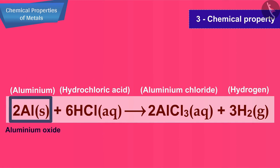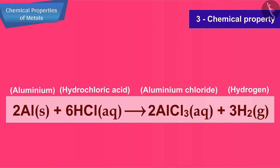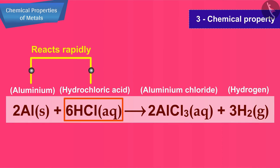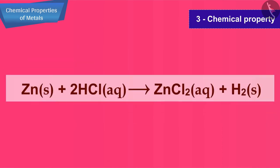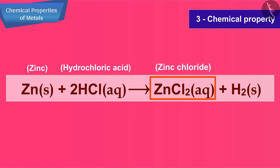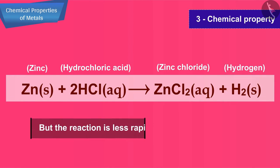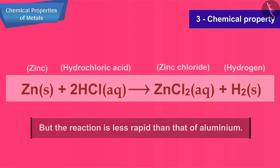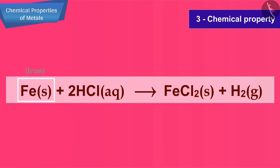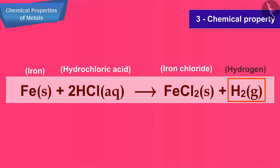Aluminium metal at first reacts slowly with dilute hydrochloric acid due to the presence of a tough protective layer of aluminium oxide on its surface. When this outer oxide layer gets dissolved in acid, fresh metal is exposed and reacts rapidly. Zinc also reacts with dilute acid to give zinc chloride and hydrogen gas, but the reaction is less rapid than that of aluminium. Iron reacts with dilute acid to give iron chloride and hydrogen gas.